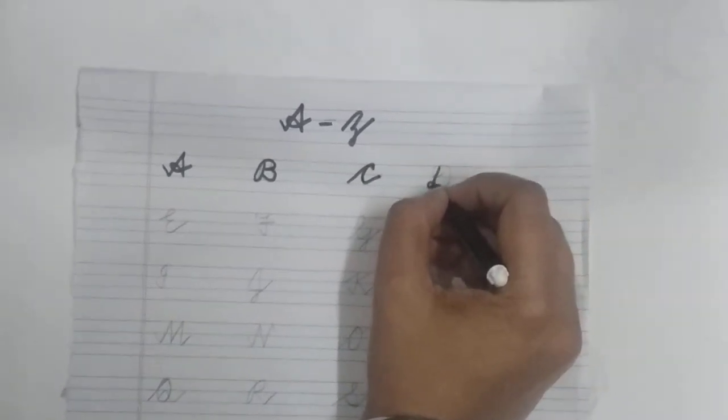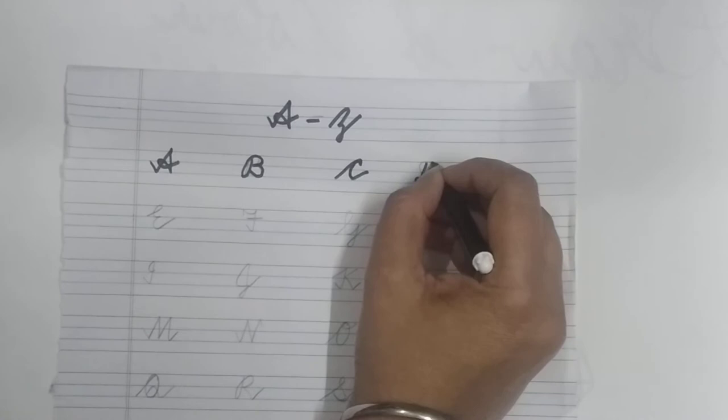Slanting line, loop, go up, curve and again curve. D.